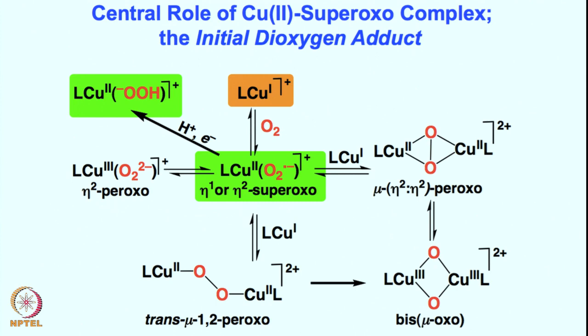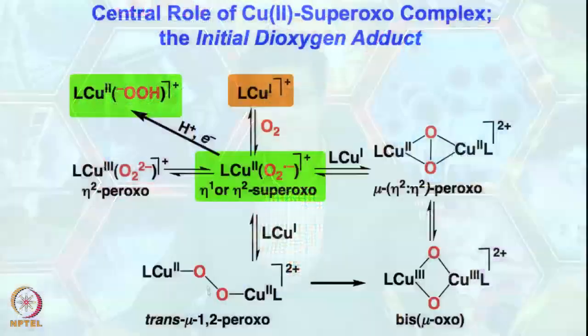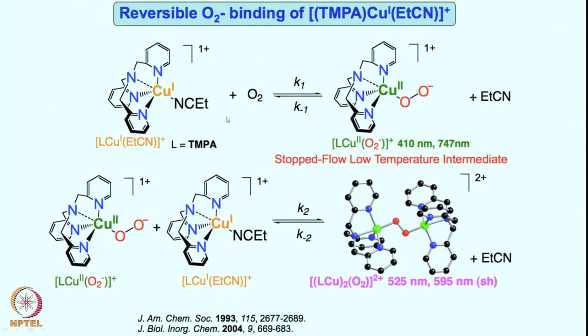Depending on whether the ligand is an aliphatic or aromatic donor, nitrogen, oxygen, or sulfur donor, the chemistry can become even more interesting. The end-on peroxo can also be in equilibrium with or converted to the bis-μ-oxo species, showing that everything is linked and interrelated. There is an opportunity for cycling among these species in the reaction solution, making the ligand-copper synthetic chemistry very sensitive and difficult to isolate for reactivity studies. The end-on peroxo and side-on peroxo are nucleophilic and electrophilic in nature, respectively, enabling a broad range of chemistry.